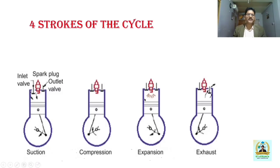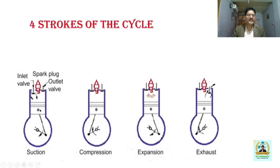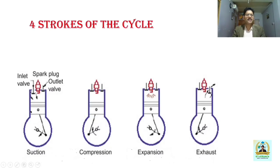Now we will come to the functioning of a four-stroke cycle engine. The four-stroke cycle engine consists of four strokes: suction stroke, compression stroke, expansion stroke, and exhaust stroke. In the suction stroke, the piston is initially at the top dead center (TDC) position. As the piston moves from TDC to BDC, a partial vacuum is created. The inlet valve is in the open position, and due to the volumetric increase, the air-fuel mixture is drawn into the engine cylinder. This continues until the piston reaches BDC. During the suction stroke, the exhaust valve is in the closed position.